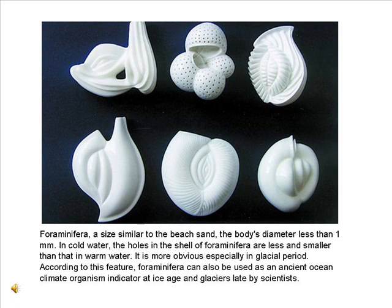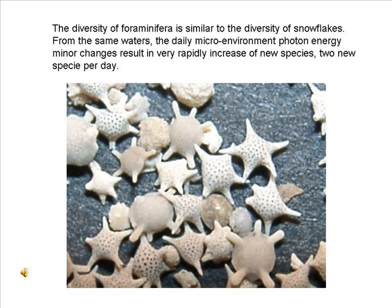Foraminifera, similar in size to beach sand with body diameter less than 1 mm, show photon-driven diversity. In cold water, the holes in the shell of Foraminifera are fewer and smaller than in warm water, which is especially pronounced during glacial periods. According to this feature, Foraminifera can be used as an ancient ocean climate indicator for ice ages. The diversity of Foraminifera is similar to the diversity of snowflakes — from the same waters, daily microenvironment photon energy minor changes result in a very rapid increase of new species.